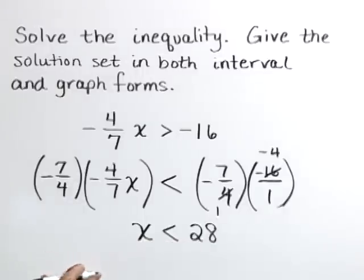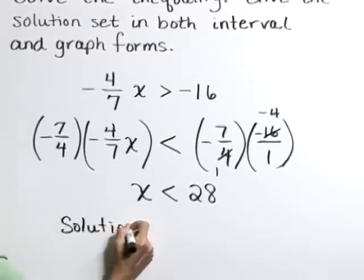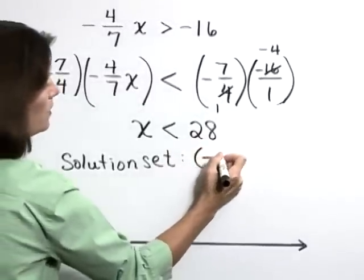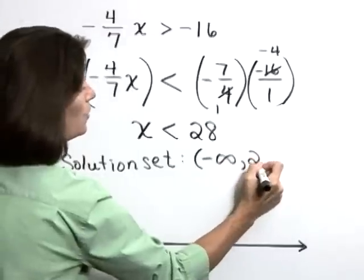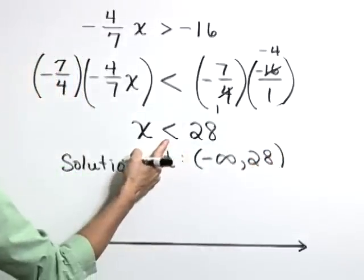Let's write that in interval form as the solution set. Includes values from back here in the direction of negative infinity, up to 28, not inclusive. That's a strict less than symbol.